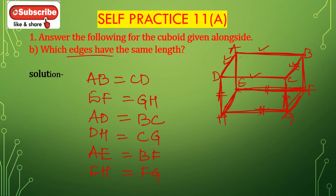Then A and B, F have the same length. E, H and F, G. D, H and F, G have the same length.